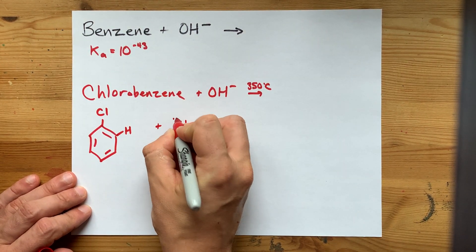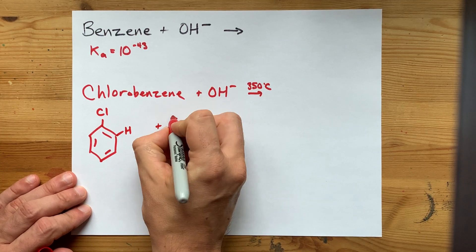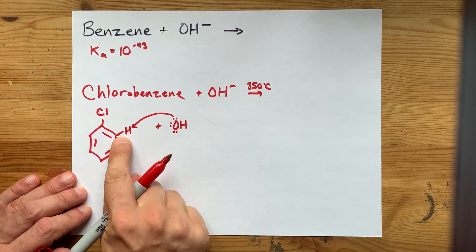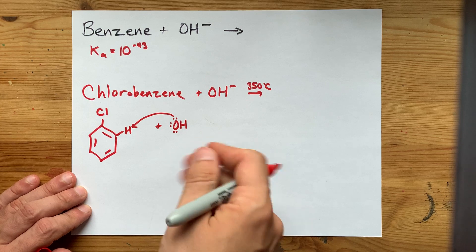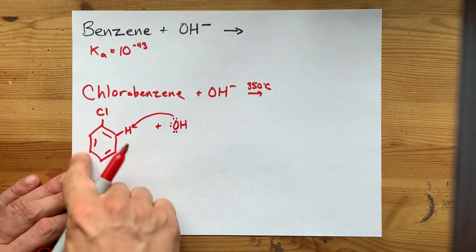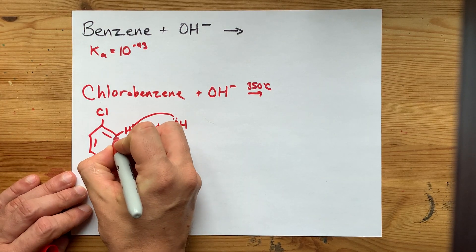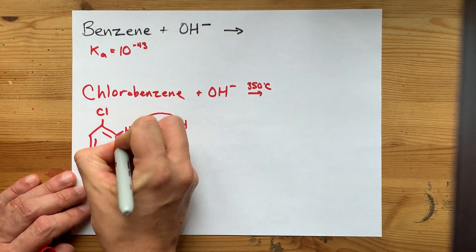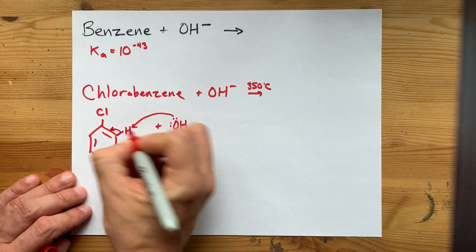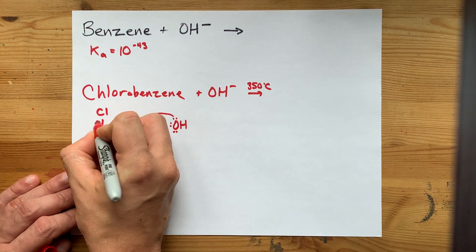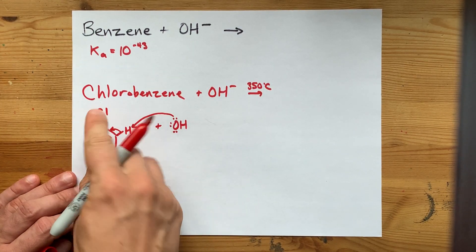The OH- ion goes and steals away that H, but that H is more likely to come off of the ring than it was in pure benzene, because the electrons that hold hydrogen to the carbon ring can flow into this double bond, and chlorine can become chloride as a leaving group.